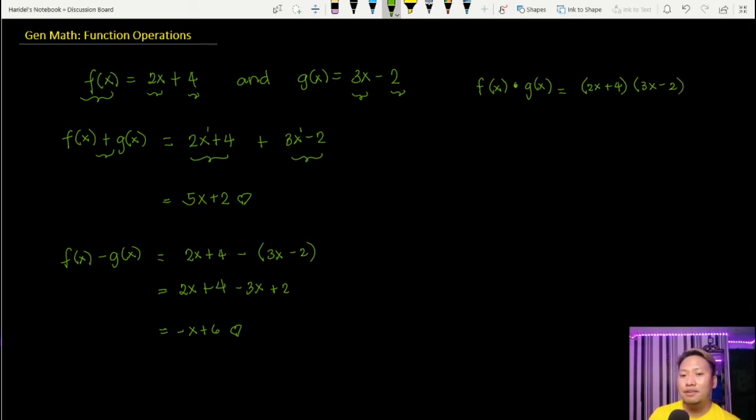Let's try to multiply these two functions to get the product. You have 2x + 4 and we have 3x - 2. In this case, we are going to use the FOIL method. I hope you guys are familiar with this. FOIL stands for First terms, Outer terms, Inner terms, and Last terms. So let's start. What is 2x times 3x? We have 6x². What is 2x times negative 2? We have negative 4x.